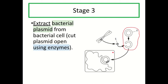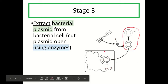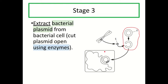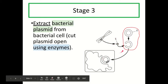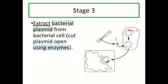In stages one and two we focused on the human cell, but now we move on to the bacterial cell. We extract a bacterial plasmid from the bacterial cell in stage three. Then, to make room for the new human gene, the plasmid is cut open — you can see there's now a little gap. We can't put the gene in without there being a gap in the plasmid, and this step also uses enzymes.